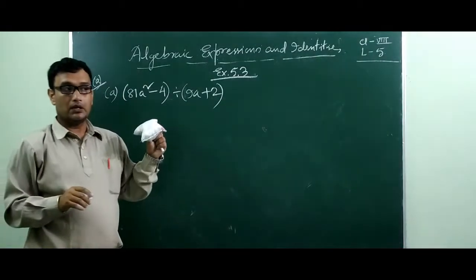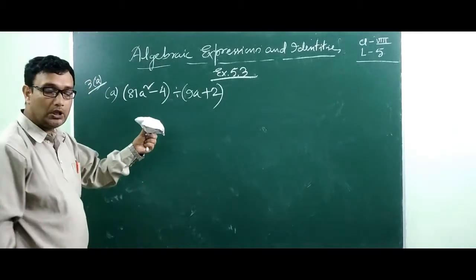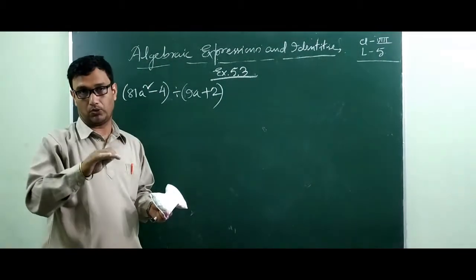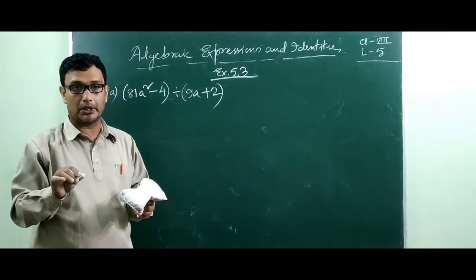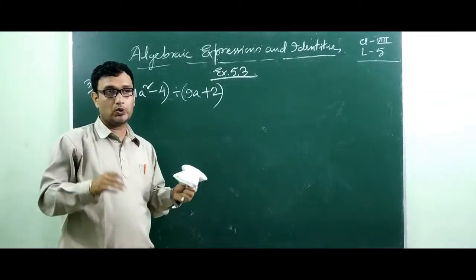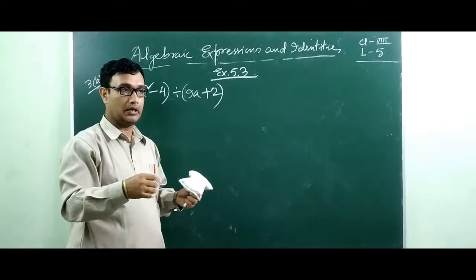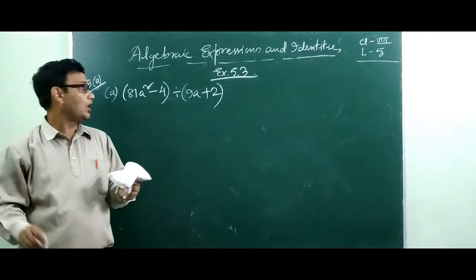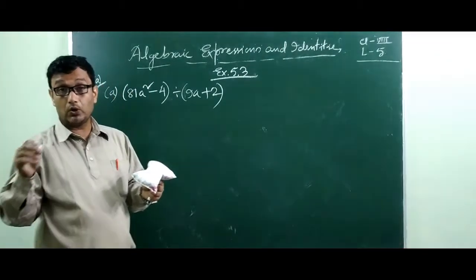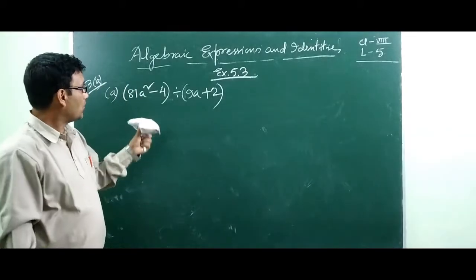In my last class when I taught exercise 5.2, I solved all the multiplication using the horizontal method — not the vertical method. I told you before: since you are class 8 students, when you go to class 9 and 10 we always use the horizontal method, so I am teaching only the horizontal method. In horizontal method you will use addition, subtraction, and multiplication.